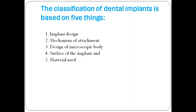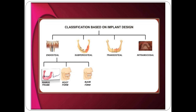The classification of dental implants is based on five things: implant design, mechanism of attachment, design of the macroscopic body, surface of the implant, and material used. Classification based on implant design, depending upon their placement: endosteal, subperiosteal, transosteal, intramucosal, ramus frame, root form, and blade form.